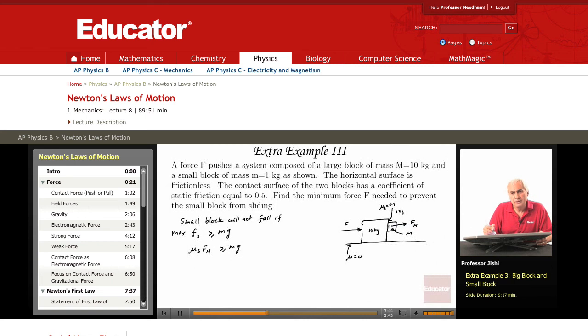The small block by Newton's third law applies an equal but opposite force to the big block. So it applies a force F_n also but in the opposite direction.